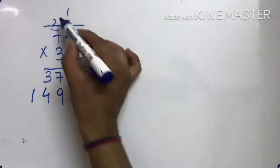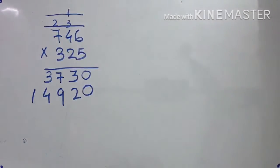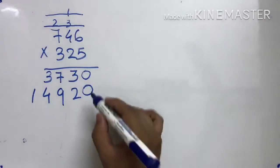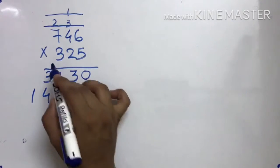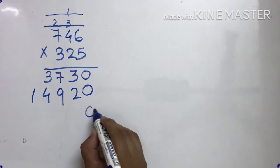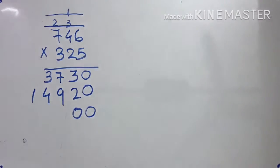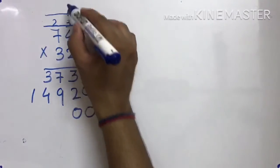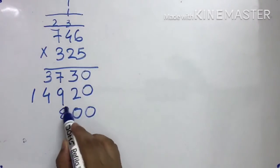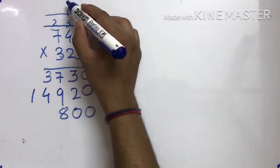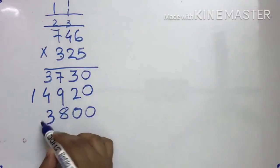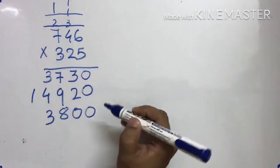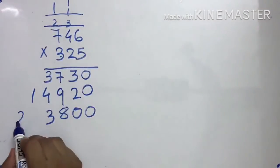Abhi third number aaya. Ye bhi carry cut. Third number aaya, to kya karenge — second number aata tha usme 1 zero daalte the. Abhi third number aaya to usme last mein 2 zeros daalenge. 3 × 6 = 18. 3 × 4 = 12, 12 plus 1 = 13. 3 × 7 = 21, 21 plus 1 = 22.